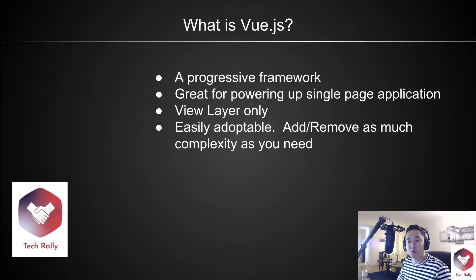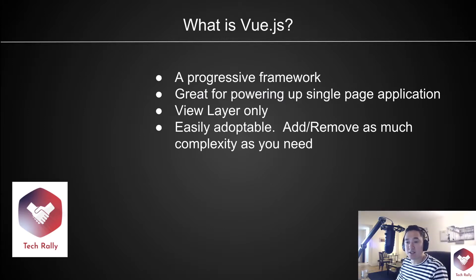So what is Vue.js? Vue.js is a progressive framework. A progressive framework allows the flexibility to opt-in to new features if needed. If you don't necessarily need routing in your application, then why add it? At the root, Vue.js is a view layer framework where you can add libraries such as single page routing, data fetching, and state management. As a developer, you can add or remove as much complexity as you need.